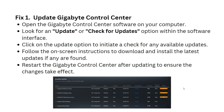Click on the update option to initiate a check for any available updates. If an update is found, download and install the latest update. Then restart the Gigabyte Control Center after updating to ensure the changes take effect.